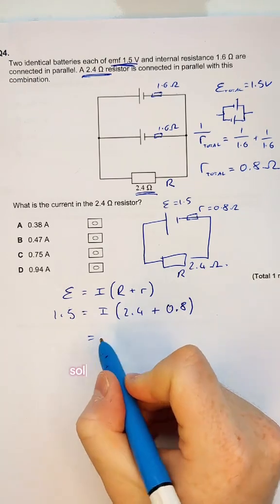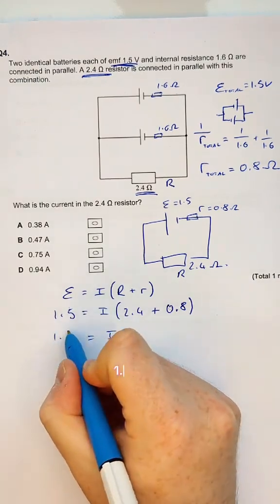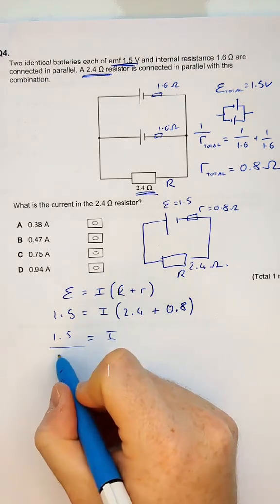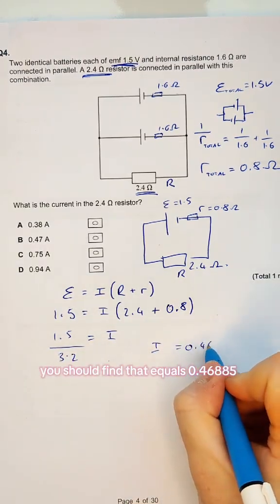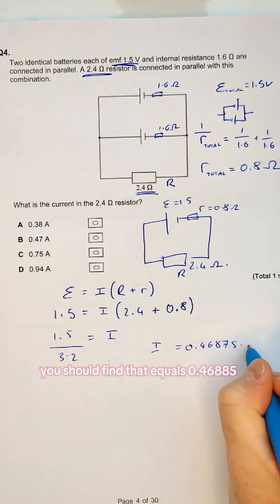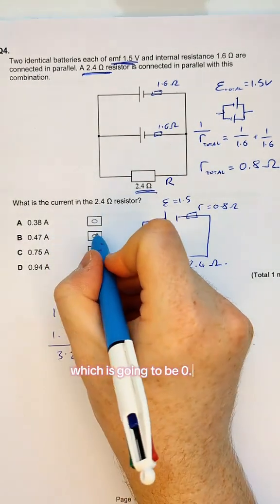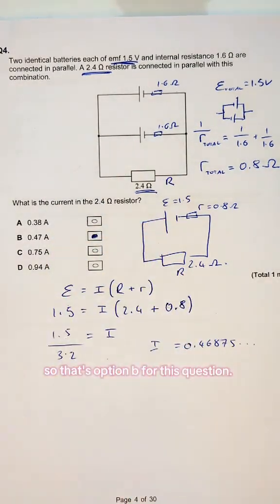If you solve for that, I equals 1.5 over 3.2, you should find that equals 0.46875, which is going to be 0.47. So that's option B for this question.